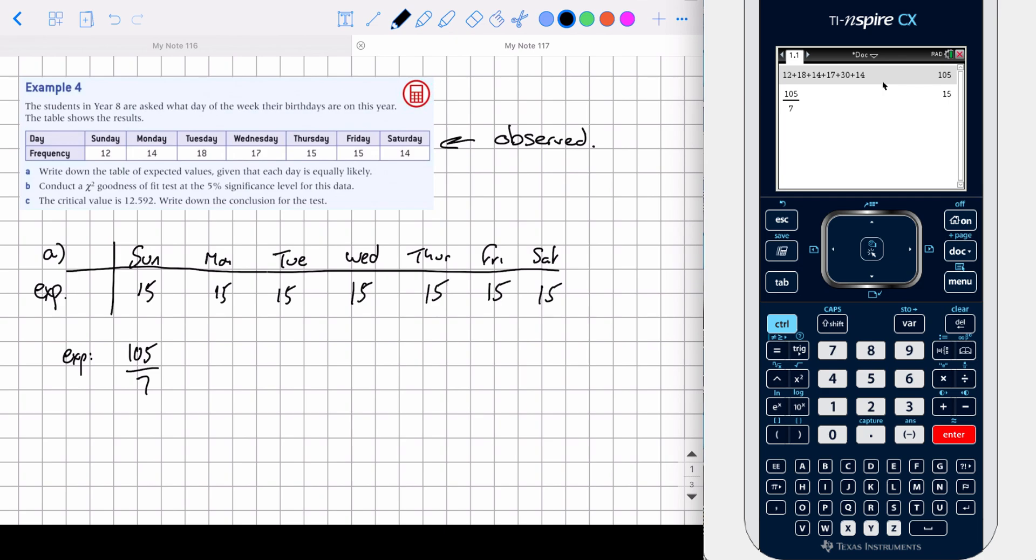Then it says conduct a chi-squared goodness of fit test at the 5% significance level of this data. So the bits that we're interested in are this bit, so it says 5% significance level, and then reading a little bit on it, it says the critical value as well. So we've got our observed frequency, and we've got our expected frequency. It's not a chi-squared test of independence, so we're not introducing a matrix. We're doing a goodness of fit.